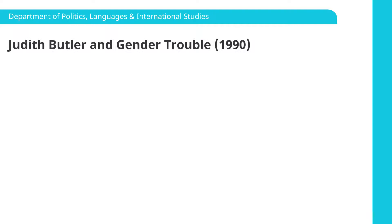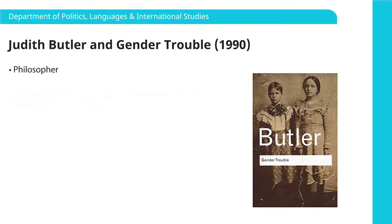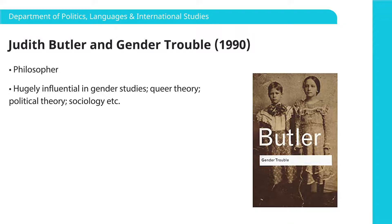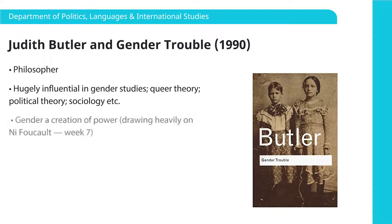Turning to the core reading: Judith Butler and Gender Trouble. Judith Butler is a philosopher — she did a philosophy PhD and is a professor of rhetoric at UC Berkeley in California. Her book Gender Trouble is hugely influential in gender studies — in many ways it creates the field of gender studies — but also hugely influential in queer theory, political theory, sociology, anthropology, and many other areas of the arts and humanities and social sciences. Butler is really drawing on the work of French philosopher Michel Foucault, and in particular his ideas about power, extending Foucault's ideas around power into the realm of gender.